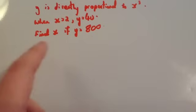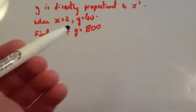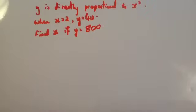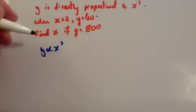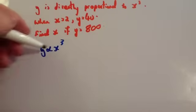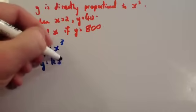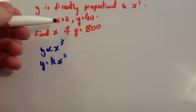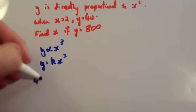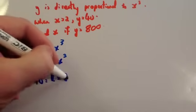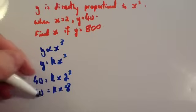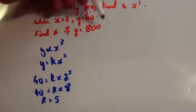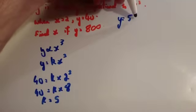Y is directly proportional to X cubed. When X equals 2, Y equals 40. Find X if Y equals 800. Start with: Y is directly proportional to X cubed, then replace the proportional sign — Y equals K X cubed. Substituting X equals 2 and Y equals 40: 40 equals K times 2 cubed, which is K times 8. So K equals 5. That gives us the formula Y equals 5X cubed.